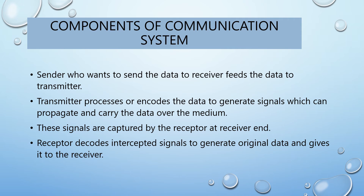The sender feeds data to the transmitter, which processes and encodes the data to generate signals that can be propagated over the medium. These signals are captured by the receptor at the receiver end, which decodes and converts them back into the original data, and gives it to the receiver. This is the basic process in electronic or telecommunication.